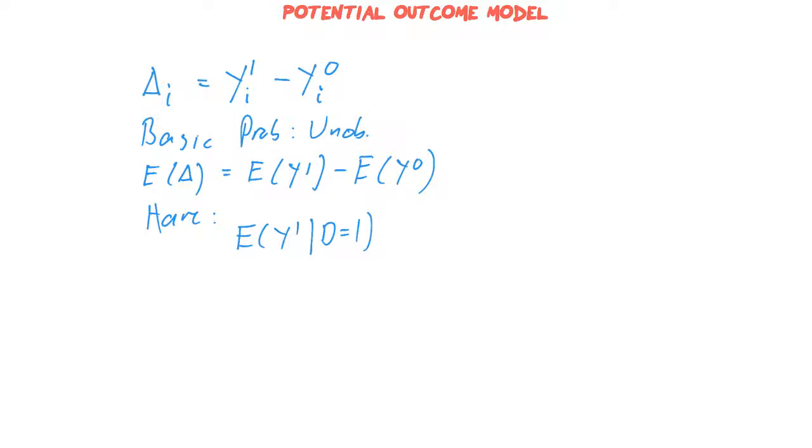That information we know. This symbolizes that, given that d is equal to 1, meaning you have received the intervention, then we know the value of, for example, your salary. For those people we do not know.